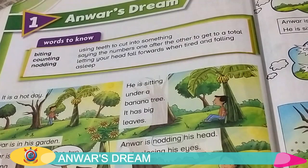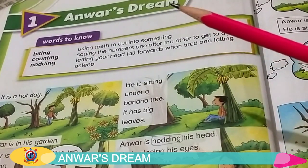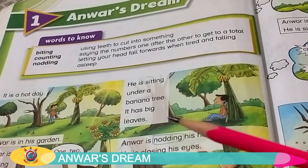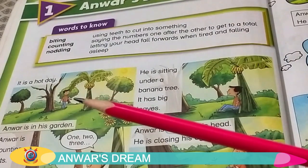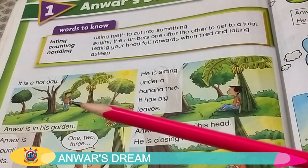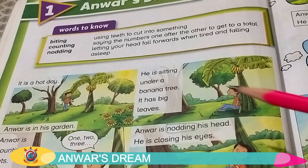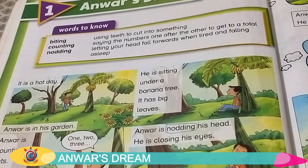Students, this is Unit 1: Anwar's Dream. This is a very interesting story about a boy whose name is Anwar. He is Anwar, can you see? Yes, and he is in his garden. Here in this picture, he is sitting under a banana tree.